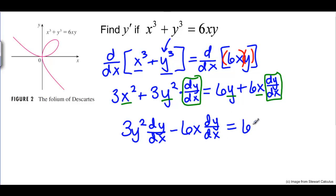That means on the right side we keep the 6y but we need to move this 3x squared over to the right side by subtracting it from both sides of the equation.